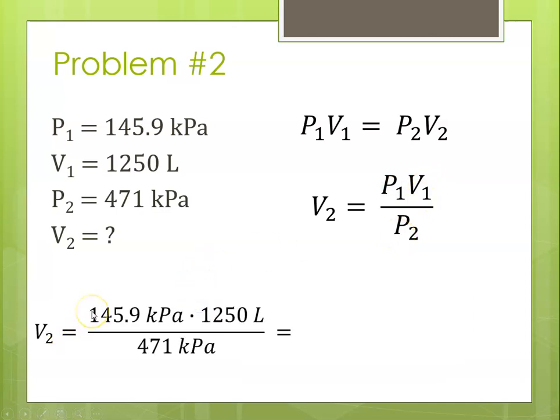Plugging in. Again, identify the variables, making sure that you're plugging P1 where it's supposed to be, V1 where it's supposed to be, and P2 where it's supposed to be. Canceling our kilopascals and plugging into our calculator. So it's going to be 145.9 times 1250 divided by 471. That gives us this number, 387.208.